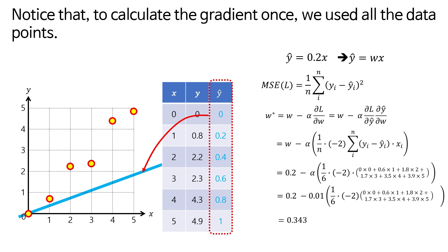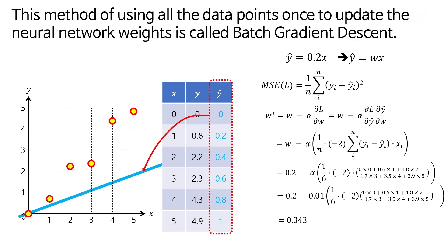Notice that to calculate the gradient once, we used all the data points. This method of using all the data points once to update the neural network weights is called batch gradient descent.